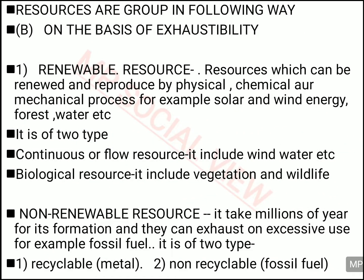The second classification is on the basis of exhaustibility — whether a resource will get finished. On this basis, resources are divided into renewable and non-renewable. Renewable resources can be renewed, replaced, or reproduced. If you use them, you will get them again, like solar energy, wind energy, and water energy. Renewable resources are of two types: continuous and flow resources like wind and water, and biological resources like vegetation and wildlife.